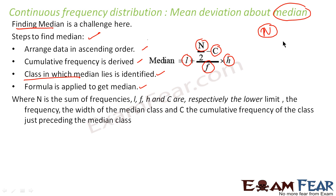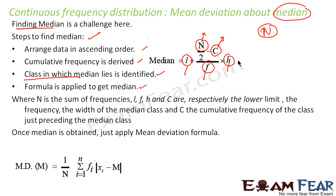Once we know the class in which the median lies, we know l, f, and h — the lower limit, frequency, and width of that class. We also know the value of c, which is the cumulative frequency of the class just above — preceding — the median class. With all these values, we can find the median. Then we use the formula: sigma fi × |xi − m| divided by sigma fi to find the mean deviation about the median.